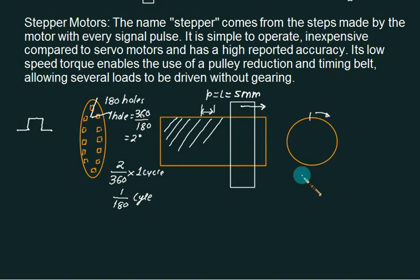So what is the accuracy for this one? It's 5 divided by 180, 5 divided by 180, 0.027 mm, it's equal to 27 micron means 1 pulse is equal to 27 micron.